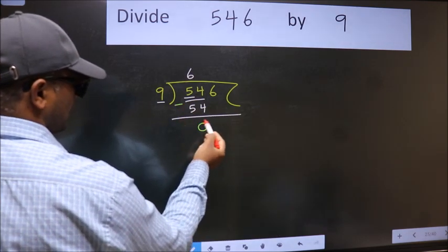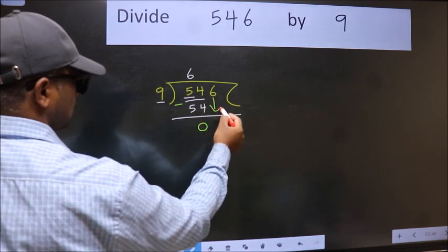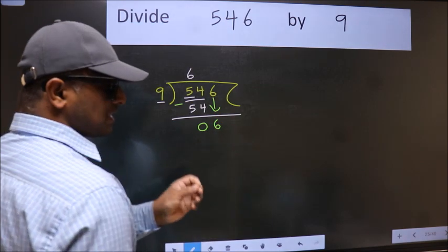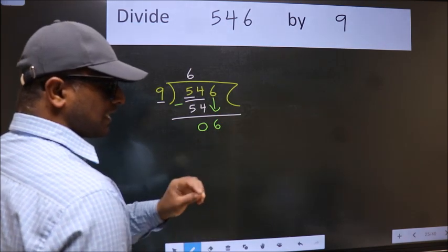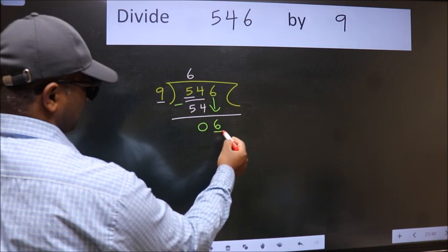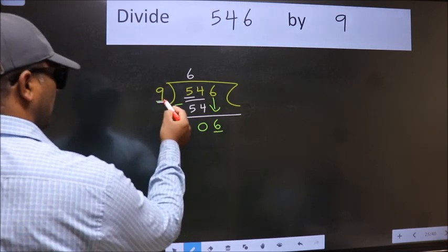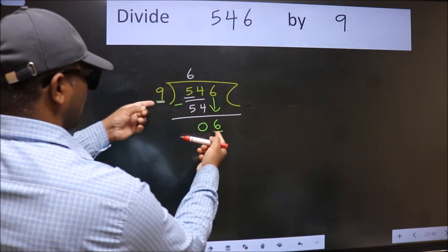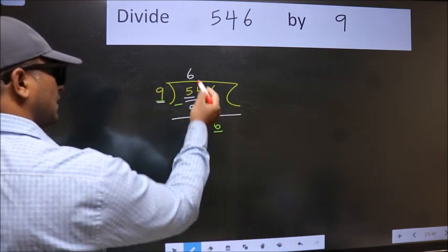After this, bring down the beside number, so 6 down. After this step, the mistake happens. And the mistake is this: here we have 6 and here 9. 6 is smaller than 9, so what many do is they